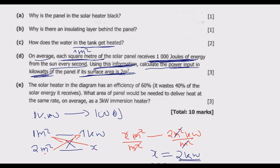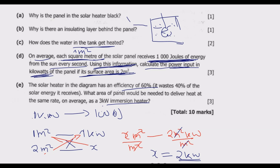Question (e): The solar heater has an efficiency of 60%, meaning it wastes 40% of the solar energy it receives. What area of panel is needed to deliver heat at the same rate as a 3 kilowatt immersion heater? An immersion heater sits directly in the liquid, so its efficiency is 100% — there is no loss of energy.